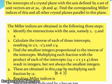The intercepts of a crystal plane with the axis defined by a set of unit vectors are at 2A, 3B, and 4C. Find the corresponding Miller indices of this and all other crystal planes parallel to this plane. The Miller indices are obtained in the following three steps: identify the intersections with the axis, namely 2, 3, and 4. Calculate the inverse of each of those intercepts resulting in 1/2, 1/3, and 1/4. Find the smallest integers proportional to the inverse of the intercepts.